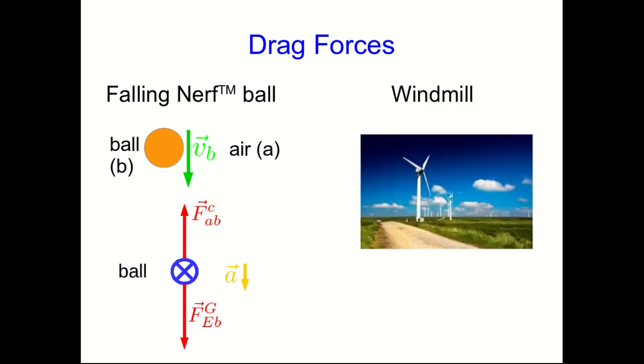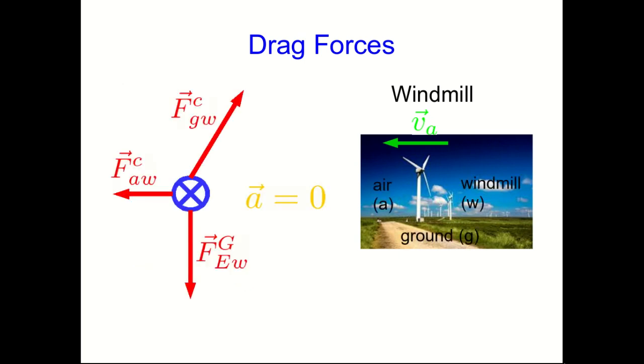But now let's think about a windmill to get a better idea of the relative velocity dependence of this direction. So the windmill itself is not moving, at least relative to the ground. But the air is moving, in this picture presumably to our left, which means you could say that the windmill relative to the air is moving to the right. And the drag has to oppose that. And so the drag force will be to the left.